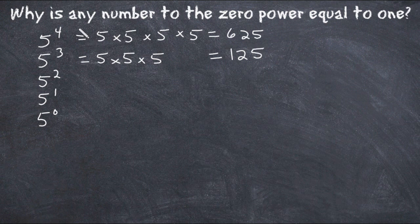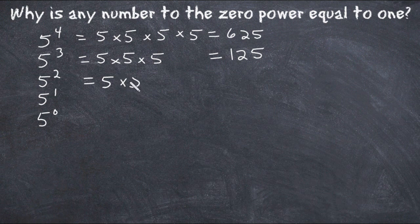So what happens when we decrease each power by a power of one? Notice that the answer got five times smaller, which means if I go from five to the third power to five to the second power, 125 will also get five times smaller. And 125 divided by five is 25, so five times five equals 25.